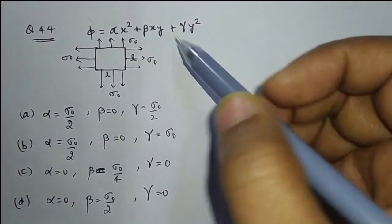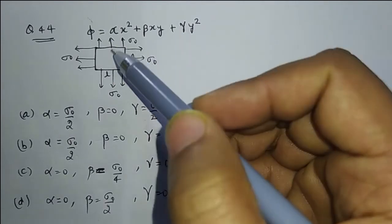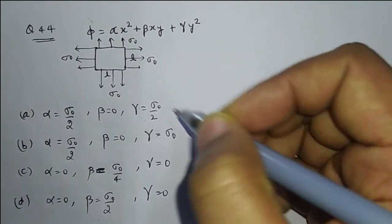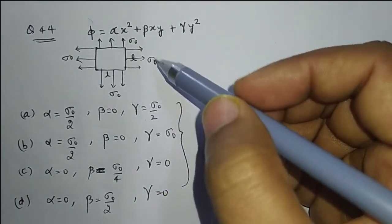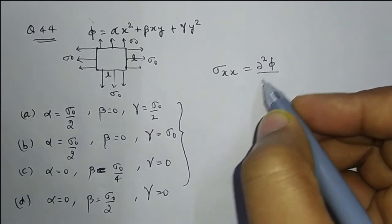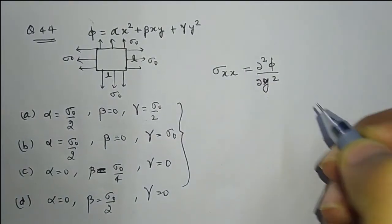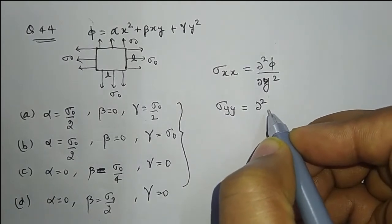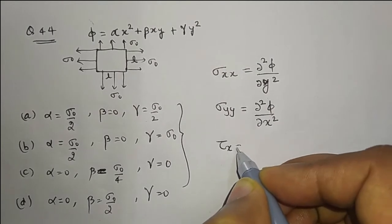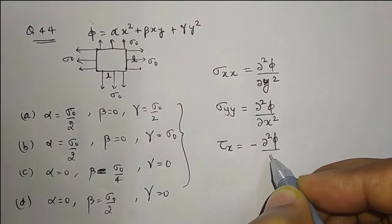Question number 44: An Airy's stress function is given for a thin square panel of size L×L, which automatically satisfies the compatibility equation. The panel is subjected to uniform stress σ₀ on all four edges. We need to find the boundary conditions satisfying the given state of stress. The stress in the x-direction is given by the second partial derivative of the Airy's stress function with respect to y, and the shear stress is given by minus the mixed partial derivative with respect to x and y.